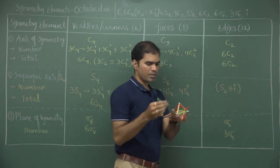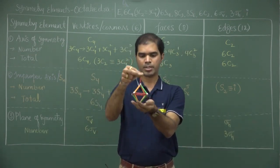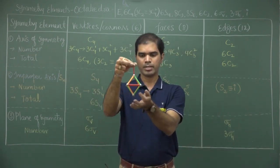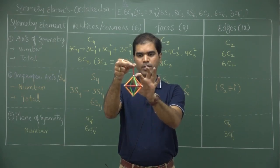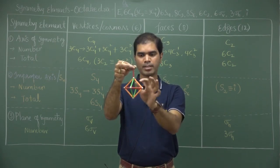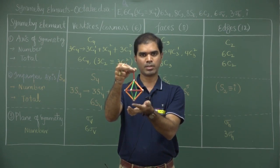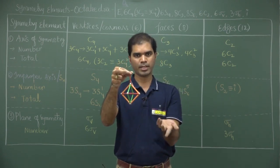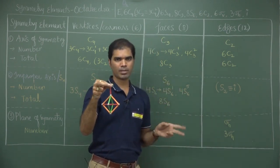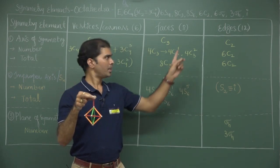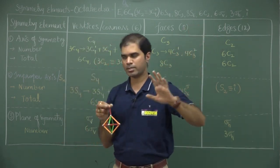For octahedra, there is also inversion present. Starting from the center, if I draw a line meeting a vertex, exactly in the opposite direction at the same distance, it also meets a vertex. Therefore, inversion is present in octahedra, and that completes all 48 symmetry elements.